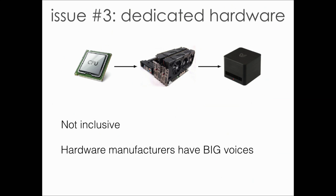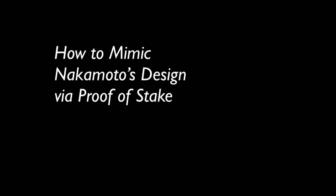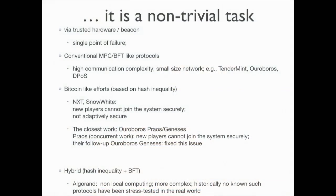Proof of Stake can arguably solve those issues. Solving this question is not trivial. People made a lot of efforts. You may try using trusted hardware or trusted beacon, but there's an obvious drawback: single-point failure. You may use multi-party computation, VSS, or BFT-like protocols — but as I argued before, those protocols are only for small-size networks, and not very trustworthy.